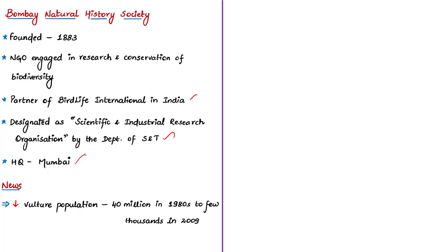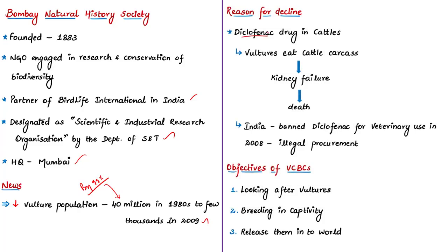By 2004, the vulture population had declined by almost 99%. The number of vultures in India declined from 40 million in the 1980s to a few thousands by 2009. The major reason for this decline is a drug called Diclofenac, commonly administered to cattle to treat inflammation. All those vultures which fed on the carcasses of these cattle died because of kidney failure, since the Diclofenac in the cattle affected the vultures.